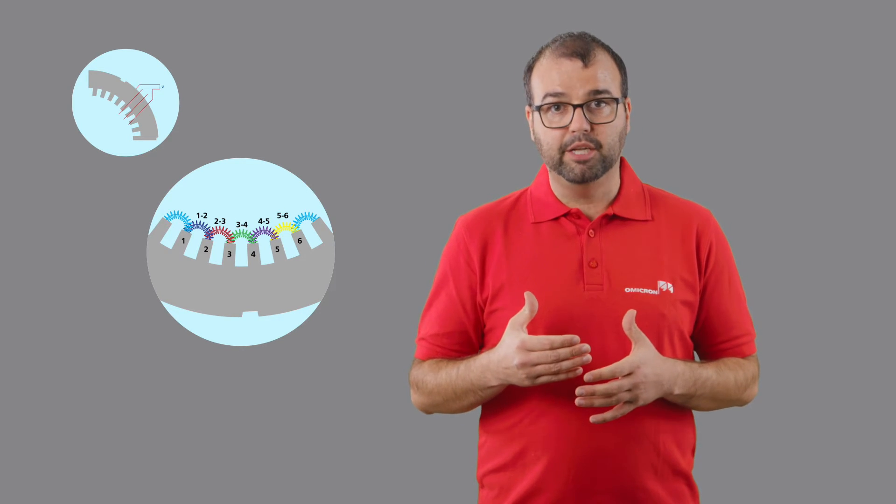The detection of potential issues happens via a sensor, a jet-dog or Rogowski coil, which is moved along the surface of the stator core. A higher reading in the measurement indicates a higher eddy current.